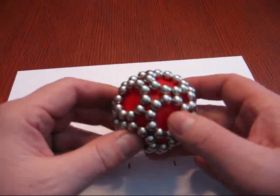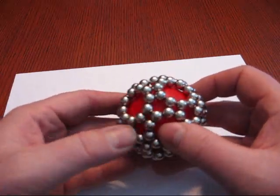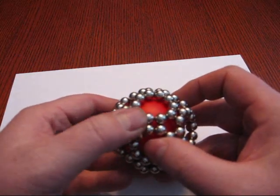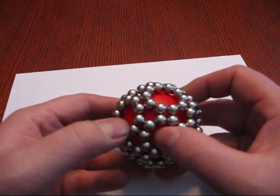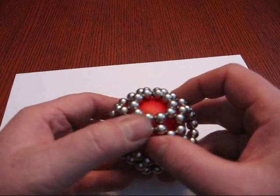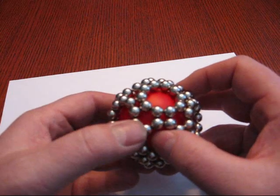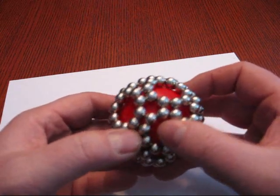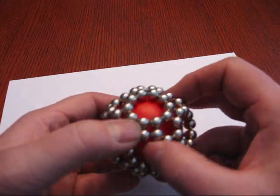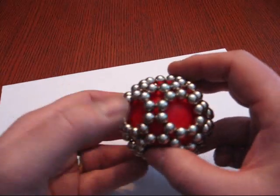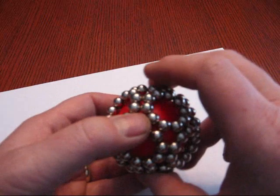But you can also look at the hexagons I mentioned before. Because you have 120, and 120 divided by 6 is 20, there are 20 hexagons in there. So it would be an icosahedron, which has 20 hexagons.